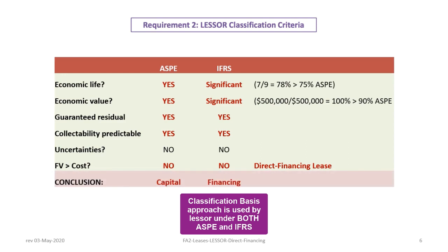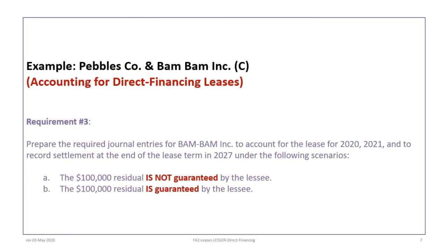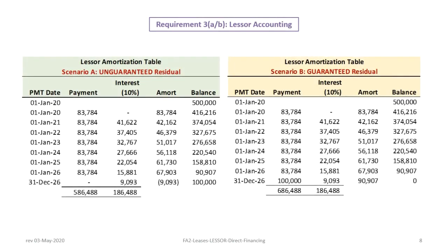The third requirement is to prepare journal entries for BamBam to account for the lease for 2020, 2021, and the settlement in 2027, shown under both scenarios — unguaranteed and guaranteed residual. We'll start by showing what the amortization tables look like under both scenarios. If you've already reviewed tutorial 12A, this will be very familiar to you.